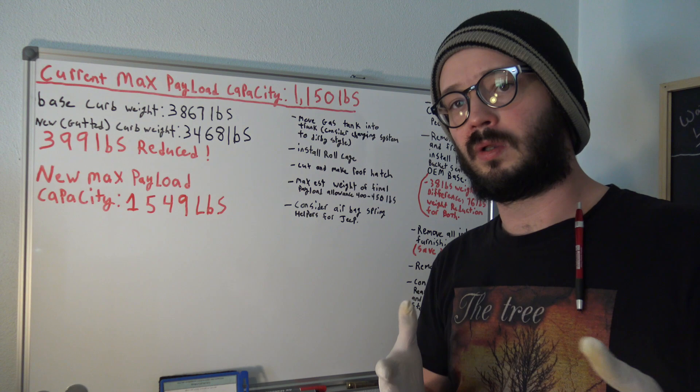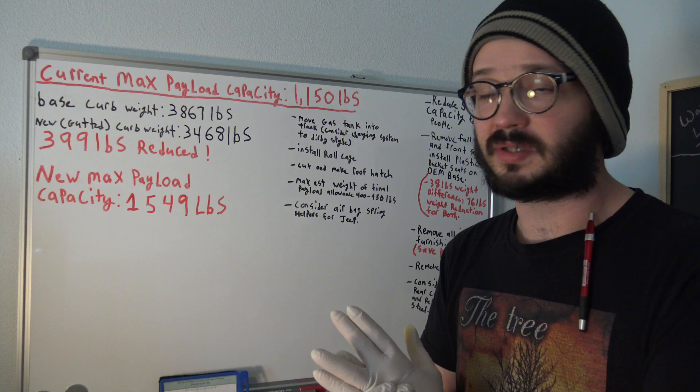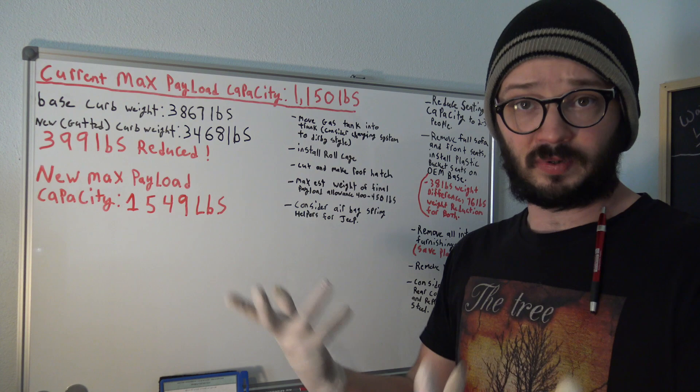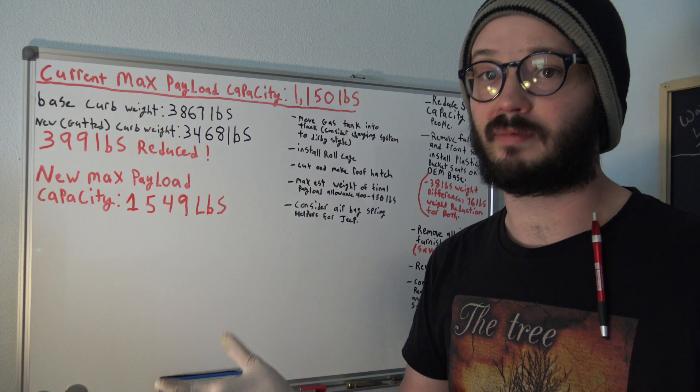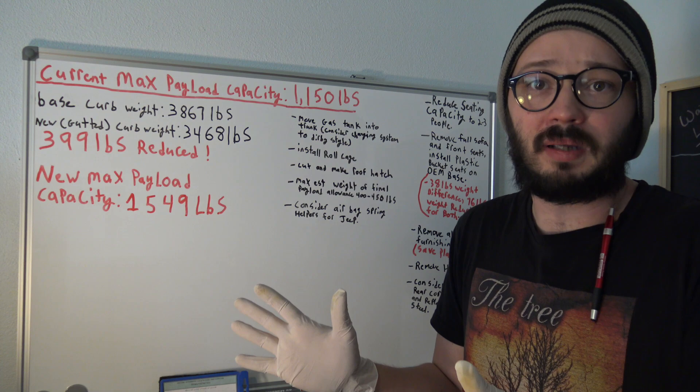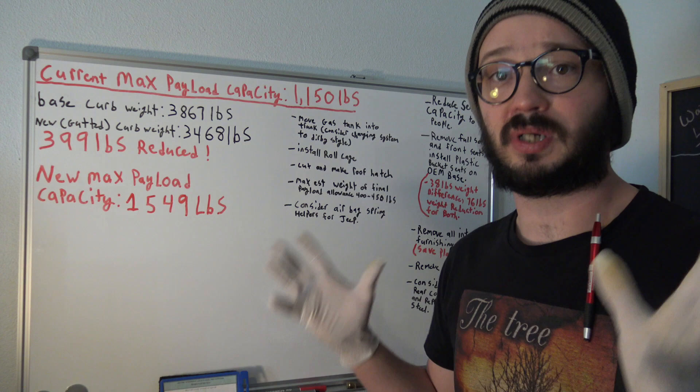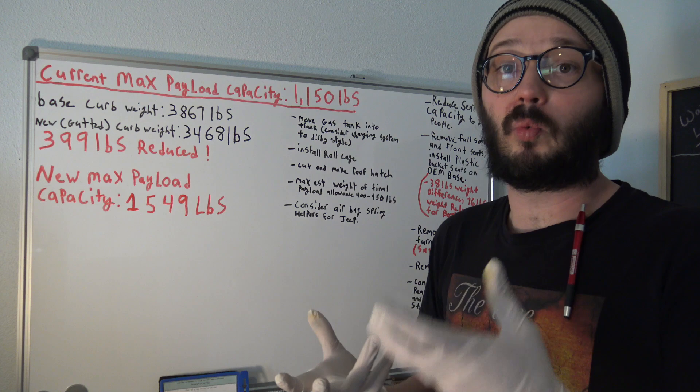So what do we do? Well, we set our heart on this 2006 Jeep Liberty. We're going to try to make this work. So first step is to gut, remove everything we can that we don't need. Obviously, we're going to reduce the amount of occupants in the vehicle down to two or three people rather than five or six. We're also going to remove all the trim panels, all the insulation, everything to give us more wiggle room.